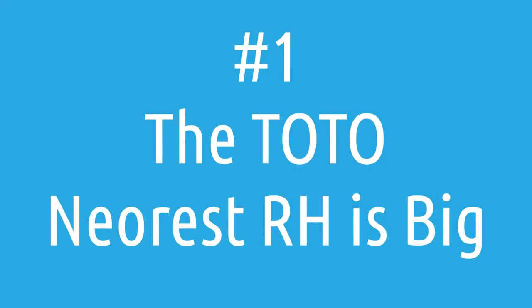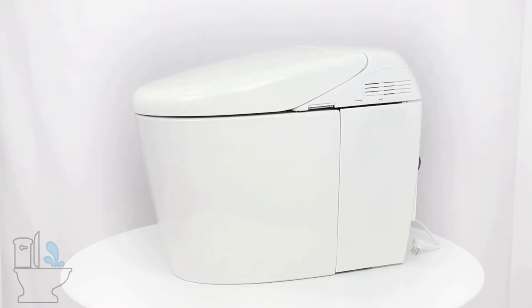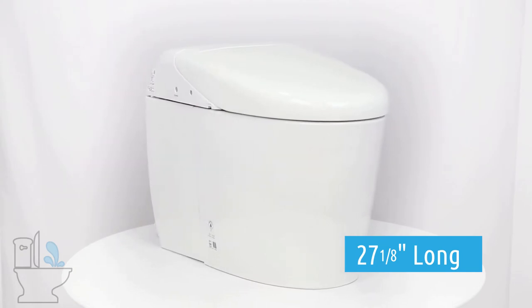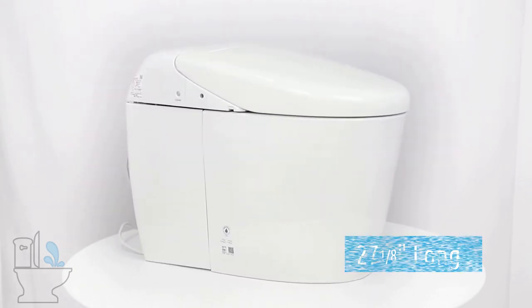The first thing you need to know about the Toto NeoRest RH is that it is a little bit on the large side. From the back wall to the front of the toilet it is 27 and an eighth of an inch. This may be similar to your existing toilet or probably pretty likely it might be a little bit larger.